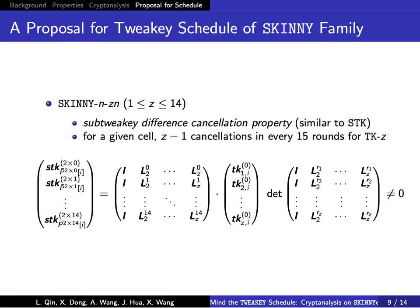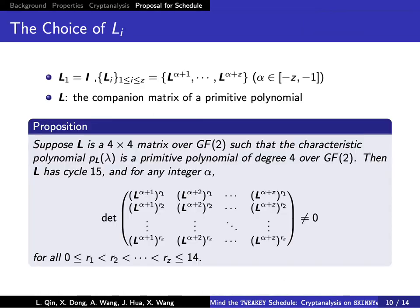We propose a unified design strategy for the Tweakey schedule of Skinny-N/Zn for positive integer Z less than or equal to 14. To satisfy the sub-Tweakey difference cancellation property, the coefficient matrix should satisfy the blockMDS property. Our construction is an extension of the generator matrix of RS codes. We set L_1 to the identity matrix and choose L_i to be consecutive powers of a matrix L. When L satisfies specific properties, for example when L is the companion matrix of a primitive polynomial, we can give a proposition to guarantee the blockMDS property.